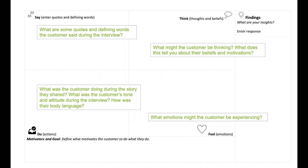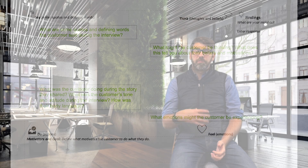One of the first sections — and probably the easiest for the team to complete — is the saying quadrant. The saying quadrant contains direct quotes, things that were said or heard during the conversations and observations.